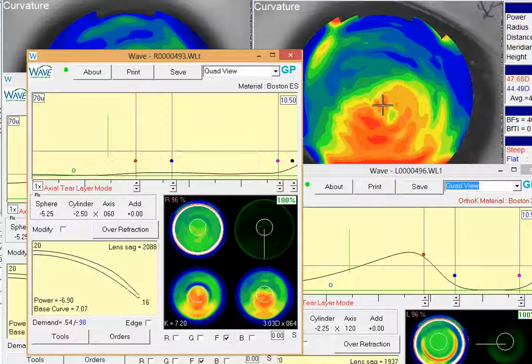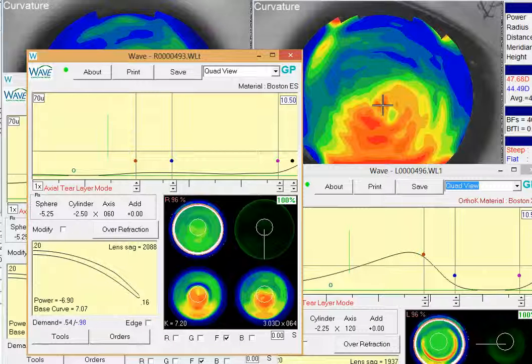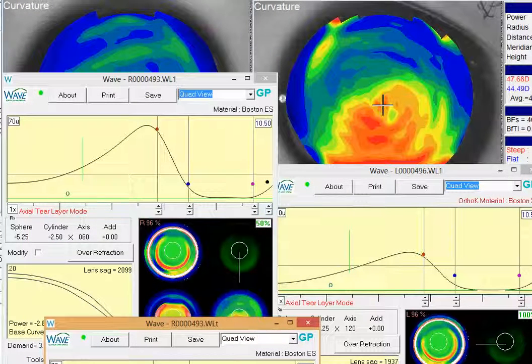It pretty closely mimics that, so it's going to more evenly distribute the weight of that lens, as you know, as opposed to your current design where you have a little bit more concentrated area of landing here.